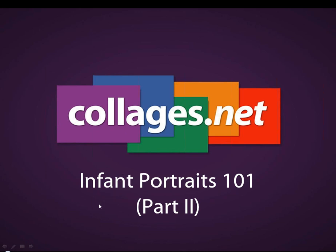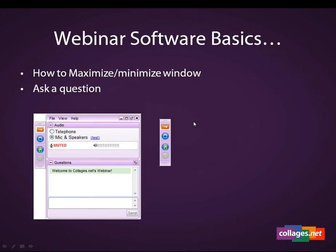Before we jump into the webinar, I just want to go over a few basic features of how to use the webinar program. In the upper right-hand corner, there is a small window. If you need to maximize or minimize it at any time, simply click the orange arrow found right here. Any questions you may have throughout the webinar, please use the chat field down here, and I will be answering these as quickly as I can while Pete's talking. At the end, we are going to do a Q&A session. So without further ado, I'm going to pass the screen on to Pete.